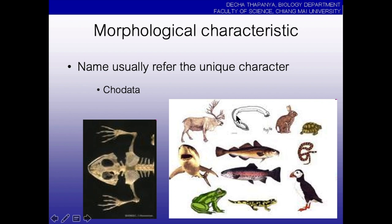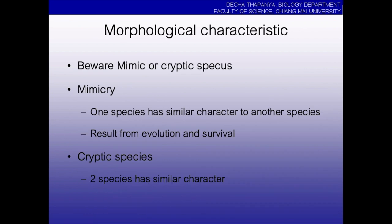Sometimes not exactly a backbone, but the name of the group refers to something that describes the character. But the weak point of morphological characteristic identification is that some species have the same characters — we call this mimicry.